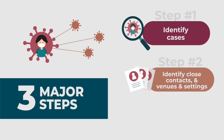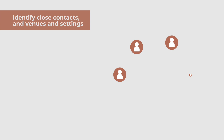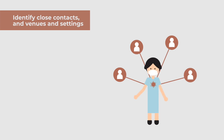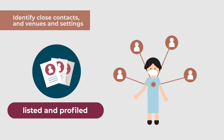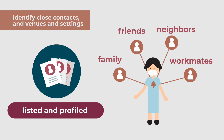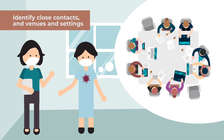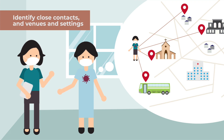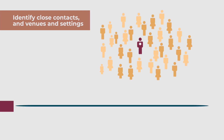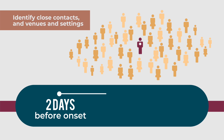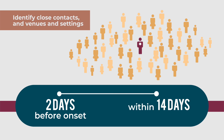Step 2: Identify close contacts and venues and settings. All persons considered to have close contact with a person with COVID-19 should be listed and profiled. These close contacts can be family members, friends, neighbors, or workmates. We ask the person with COVID-19 about his or her activities and social gatherings attended, the settings and places visited, and those who have been in close contact with him or her since two days before the onset of symptoms and within 14 days or until the person turns out negative on repeat test.